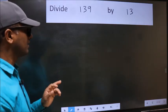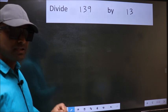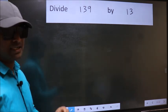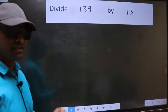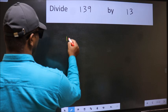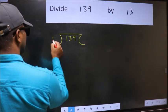Divide 139 by 13. While doing this division, many do this mistake. What is the mistake that they do? I will let you know, but before that we should frame it in this way: 139 divided by 13 here.